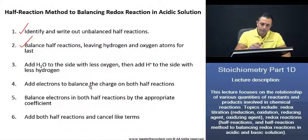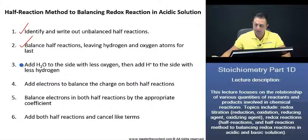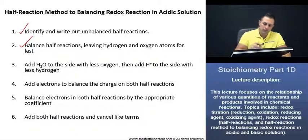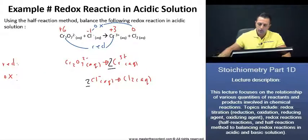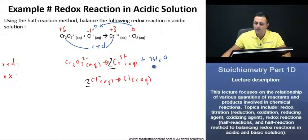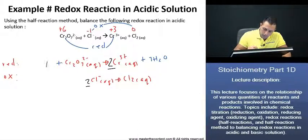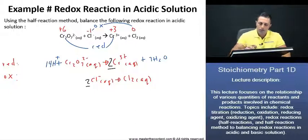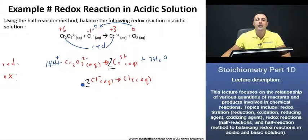Now that we've done that, let's look at what to do next. We're asked to add H2O to the side with less oxygen, then add H+ to the side with less hydrogen. Looking at the reduction reaction, we see that we have seven oxygens, so we add seven water molecules to the product side. We then need to balance the hydrogens by adding 14 H+ to the reactant side. For our oxidation half-reaction, since there are no oxygens or hydrogens, we leave it as is.